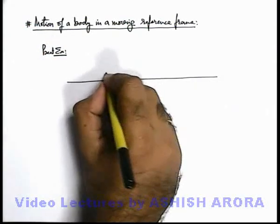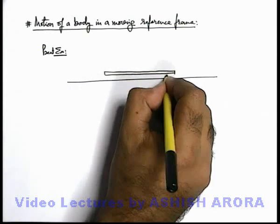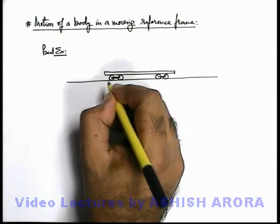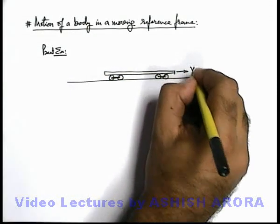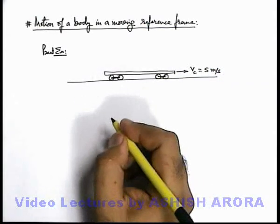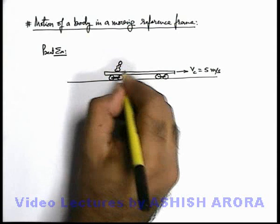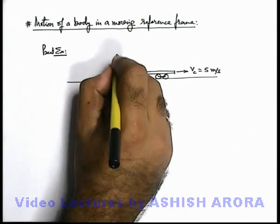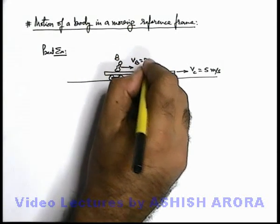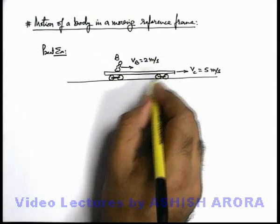On a flat road, say we are having a railroad car moving with a velocity v-c equal to 5 meters per second. There is a boy standing on the car, and this boy starts running on the car with a velocity v-b equal to 2 meters per second, in the same direction in which the car is moving.